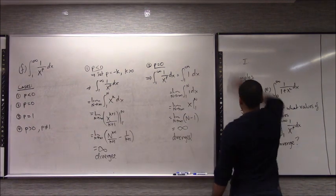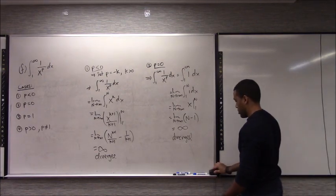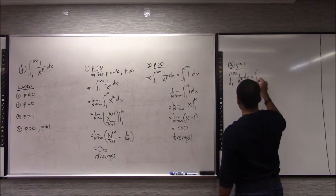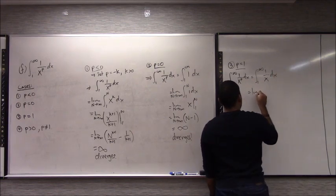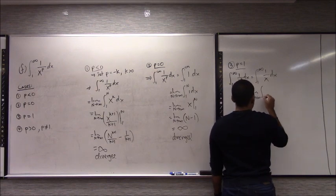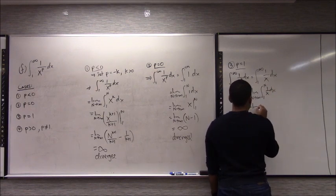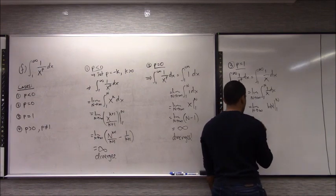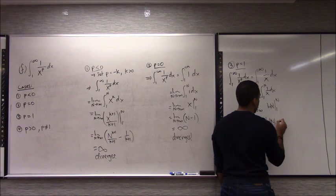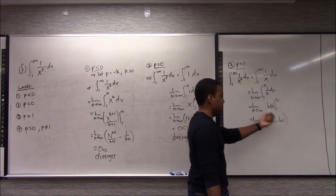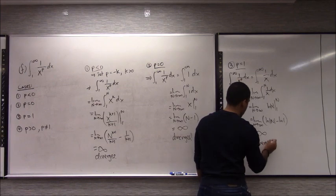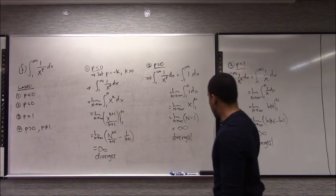Case 3, p = 1: the integral from 1 to infinity of 1/x dx. Take the limit as n → ∞ of the integral from 1 to n of 1/x dx, which gives ln|x| from 1 to n. That's ln(n) − ln(1) = ln(n) − 0. Since ln(n) goes to infinity as n → ∞, that diverges. So three out of four cases, we are diverging.